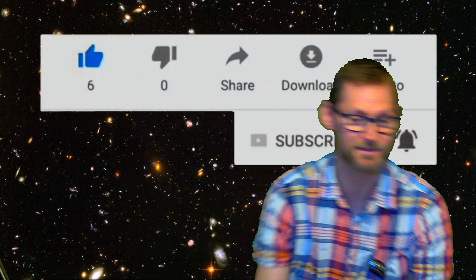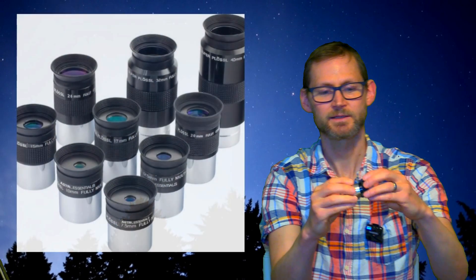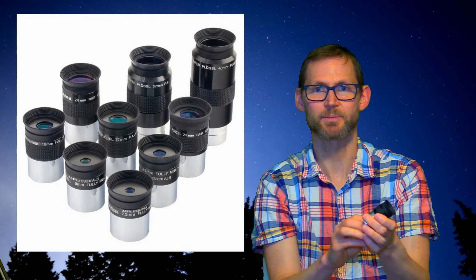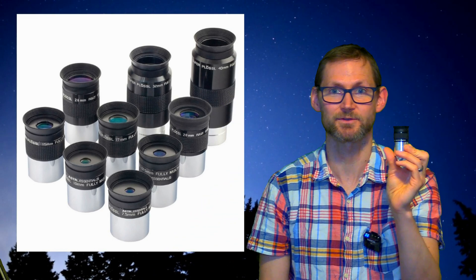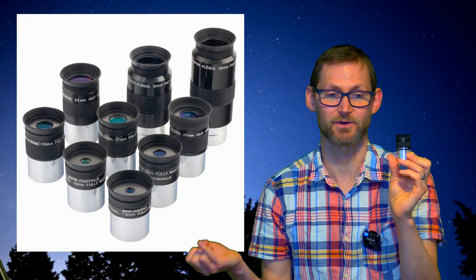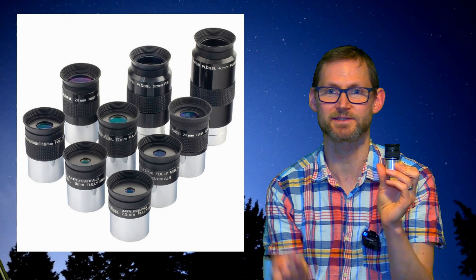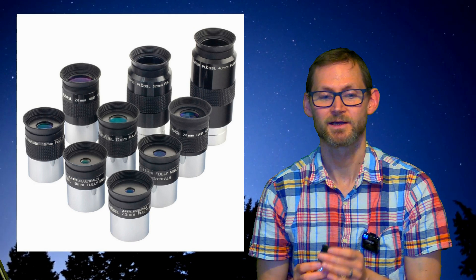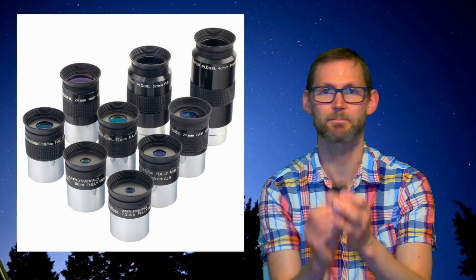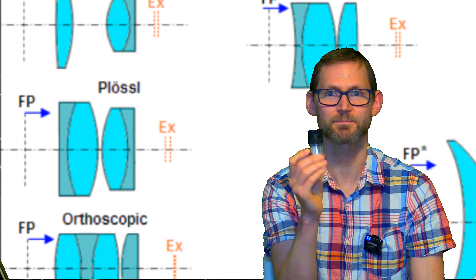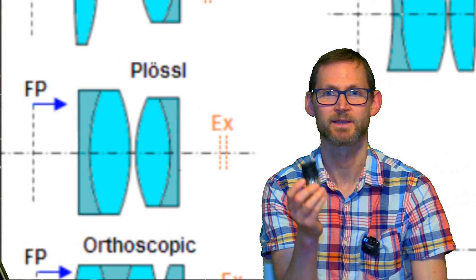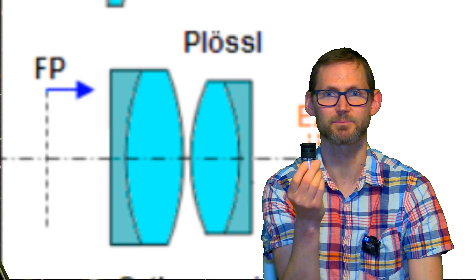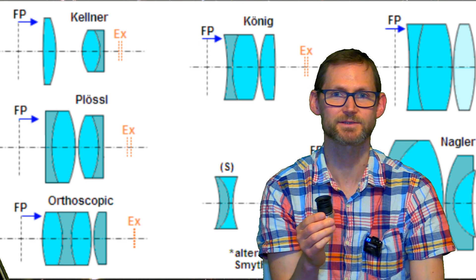A good step from that is something called a Plössl. These are still relatively affordable, around 30-40 pounds or dollars. They have a little bit more apparent field of view, and I'll talk about apparent field of view shortly, as well as types of eyepiece, focal length, how to calculate magnification, exit pupil, the importance of exit pupil, and converting apparent field of view to true field of view. But yeah, one good upgrade would be a Plössl. These have four elements in two groups, 50-52 degree field of view, all glass multi-coated elements and blackened edges, so they've got good contrast. They're a really good step up.